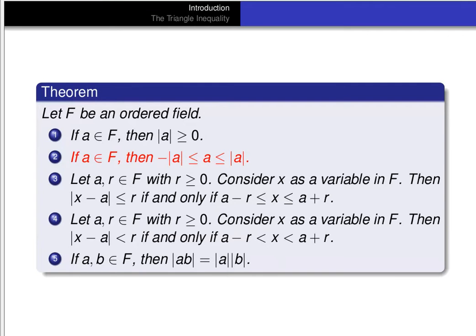We previously proved a theorem with five results about absolute values. For the proof of the triangle inequality, we'll just use the second part: if a is an element of a field f, then minus the absolute value of a is less than or equal to a, and a is less than or equal to the absolute value of a.